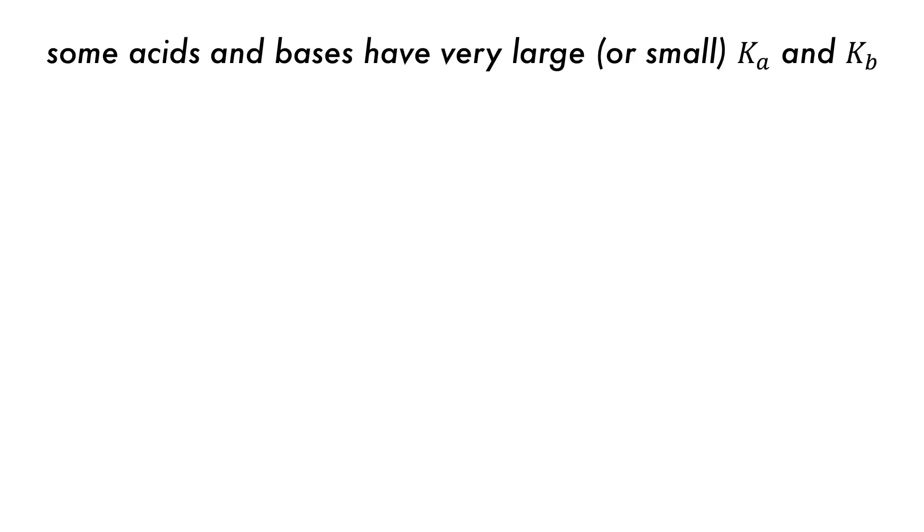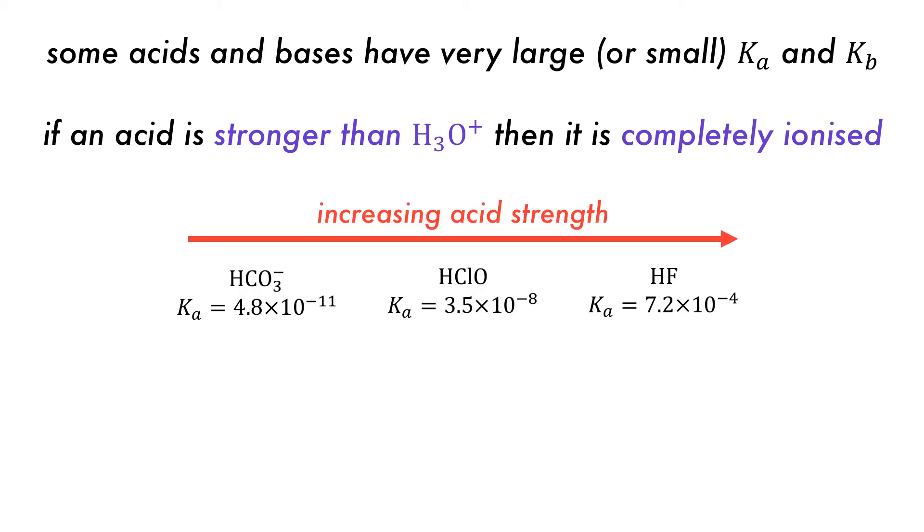The recorded values of Ka and Kb for some acids and bases can be very large or can also be very small. If an acid is stronger than hydronium ion, then it will be completely ionized in water. By comparing the Ka's of some common acids and bases, this will become clearer.